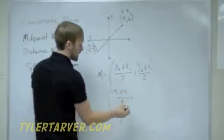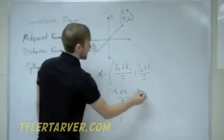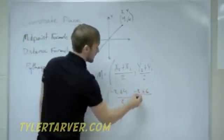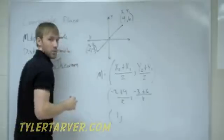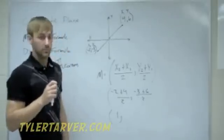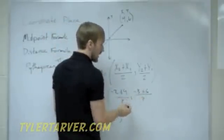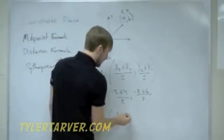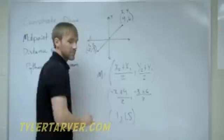Negative 2 plus 4 is positive 2. Positive 2 divided by 2 is 1. Now, we plug in our Y's. That's one problem, we work that by itself. For the Y's, we do Y2, which is negative 3, plus 6, divided by 2. Positive 3. Positive 3 divided by 2 is 1.5. That is our midpoint.